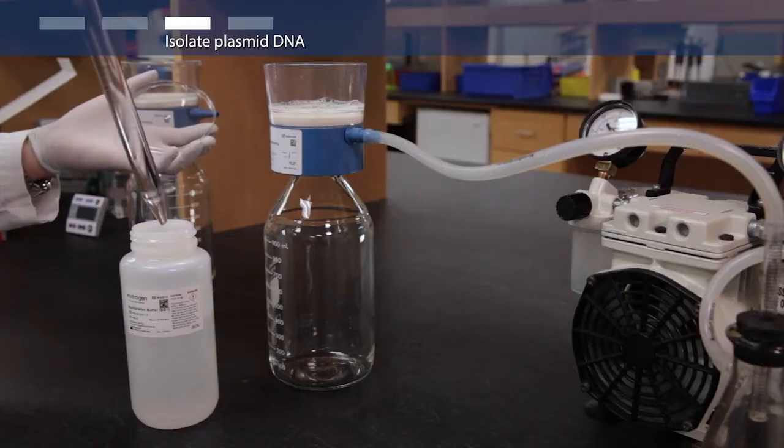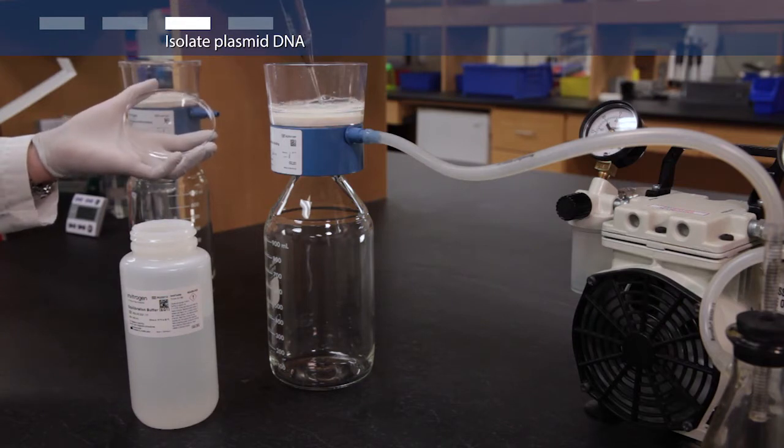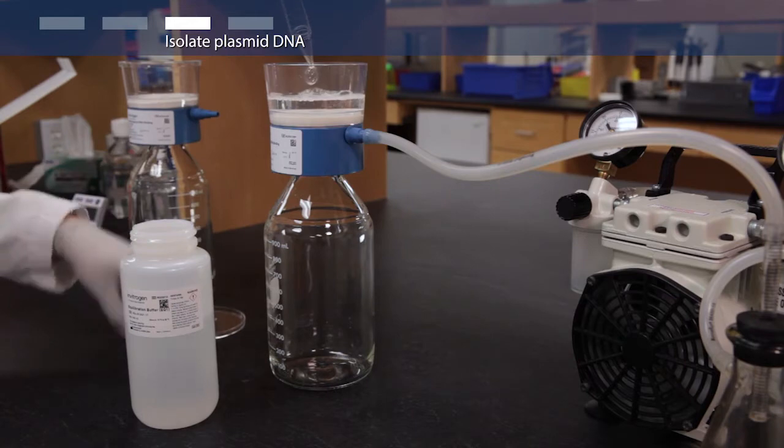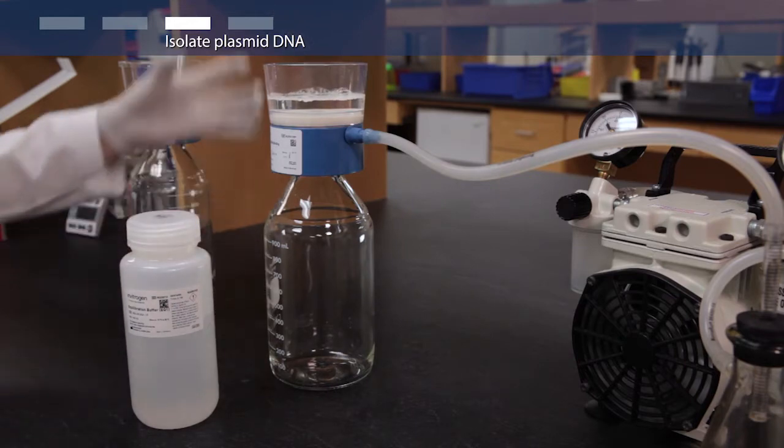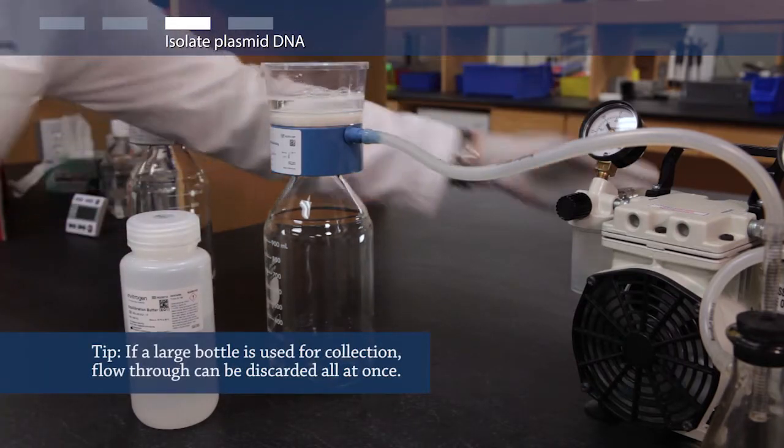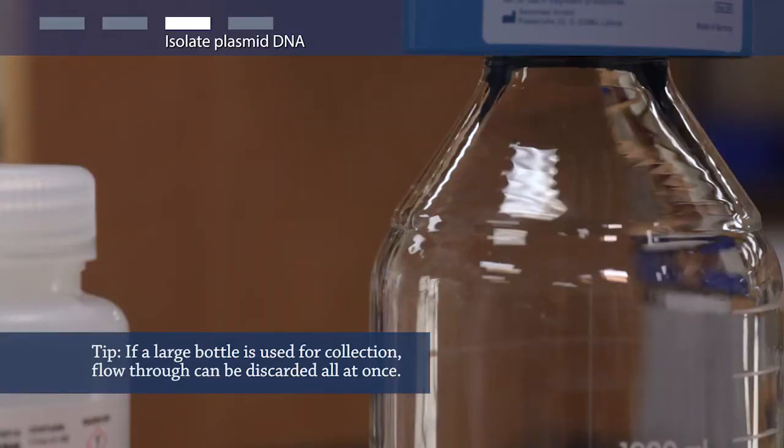Add 100 milliliters of equilibration buffer to a DNA binding cartridge attached to a receiver flask and vacuum. Apply vacuum, drain the cartridge, and discard the flow-through.